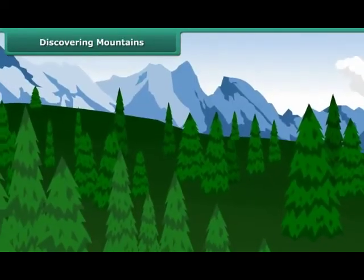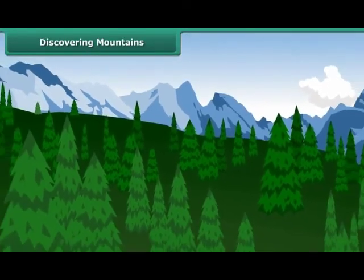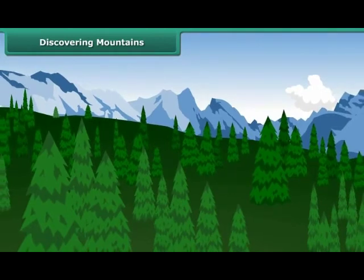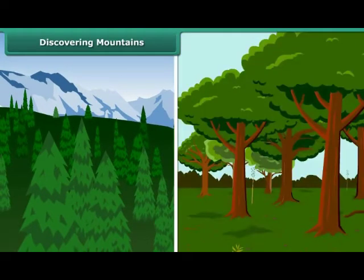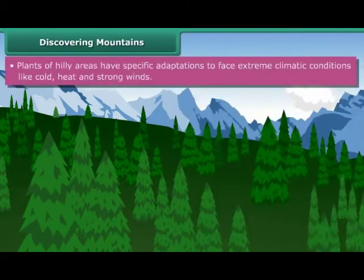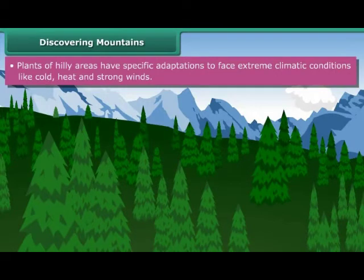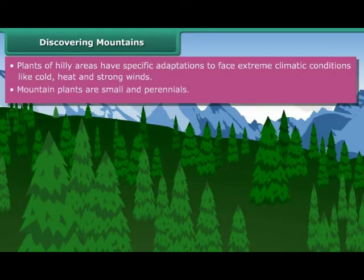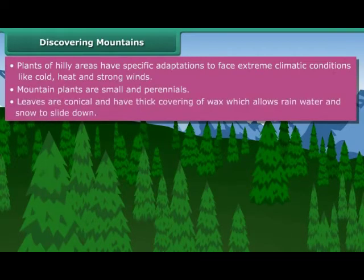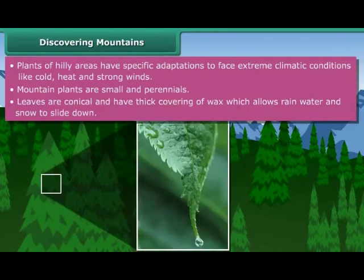Have you ever thought about why trees growing in hilly regions are different from trees growing in grasslands or forest regions? Plants of hilly areas have specific adaptations to face extreme climatic conditions like cold and strong winds. Plants are small and perennial. Leaves are conical and have a thick covering of wax, which allows rainwater and snow to slide down.